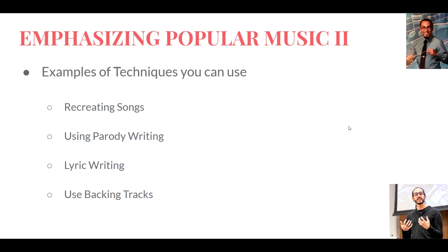One of the things we can do to incorporate popular music is have students recreate their favorite songs using something like Soundtrap, BandLab, or Audacity — getting different loops and sound clips and having them try to make that really popular radio song hit they've been listening to. Another great way is parody writing: downloading the backing tracks of their favorite song and replacing certain words to make something silly and funny based on the original.